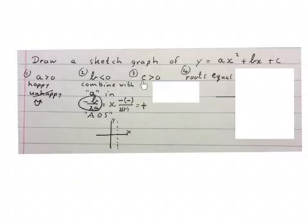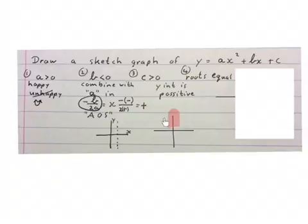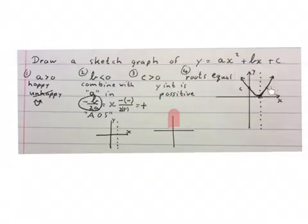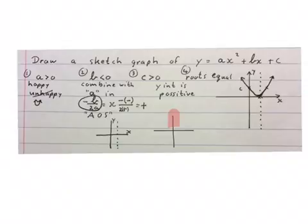They say C is bigger than zero — C at the back is my Y-intercept, so my Y-intercept is positive, meaning it will be above the X-axis. And the roots are equal, which means the parabola will be sitting on the X-axis, just touching it. So we know it's happy, the axis of symmetry is on the right-hand side, the Y-intercept is positive and above the X-axis, and the graph touches the X-axis. This is the drawing of that information. Stop the video and get your brain around this.